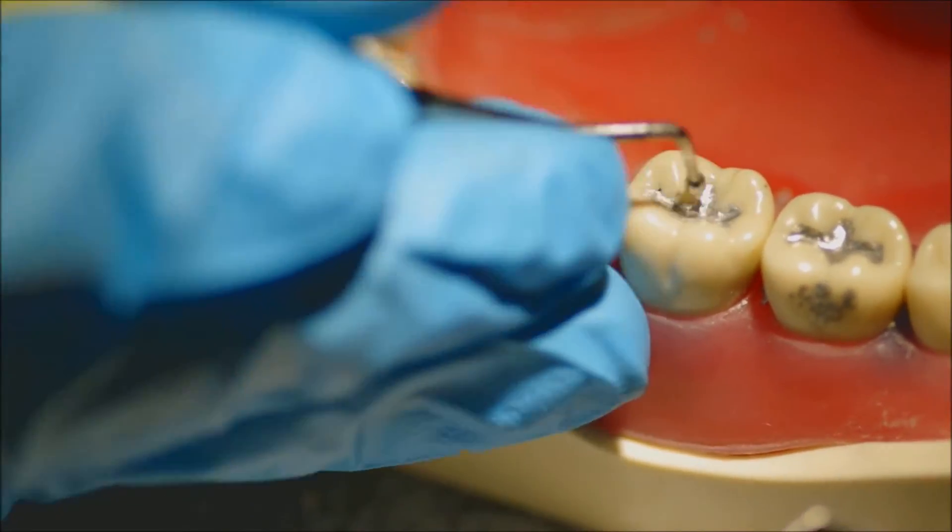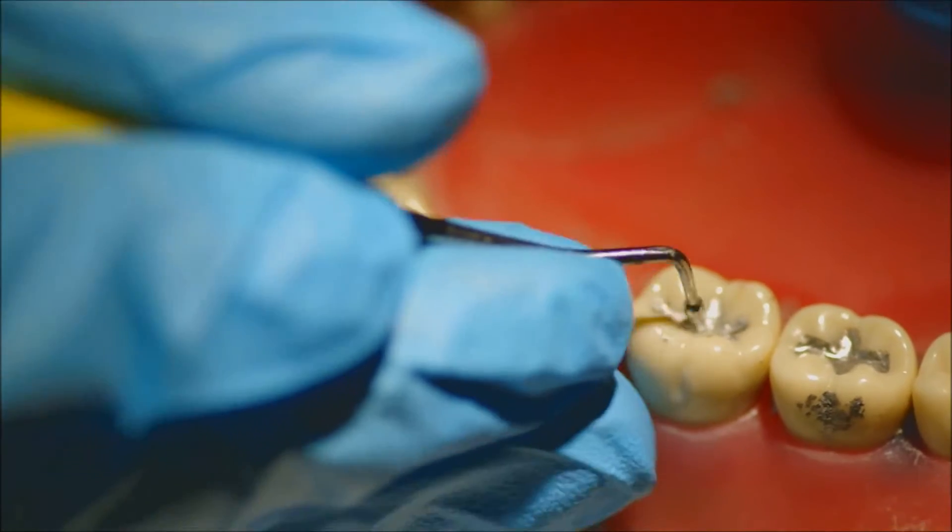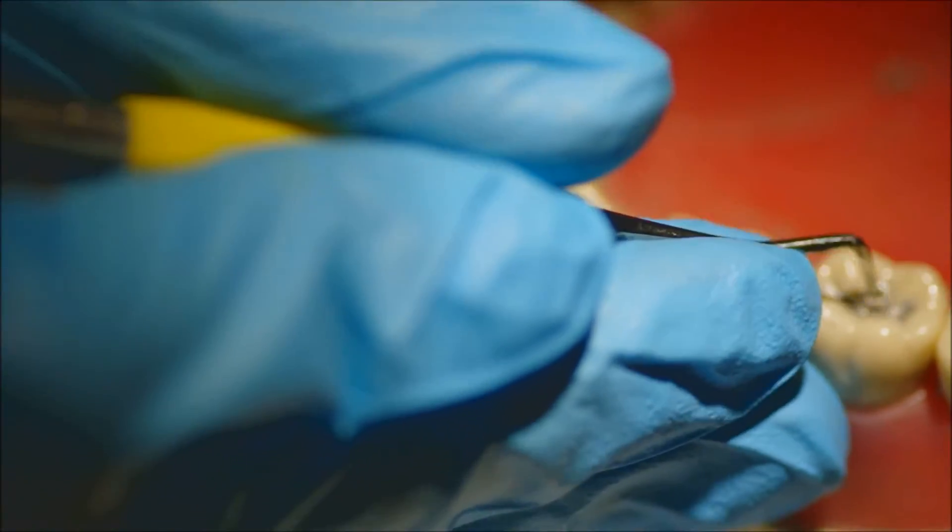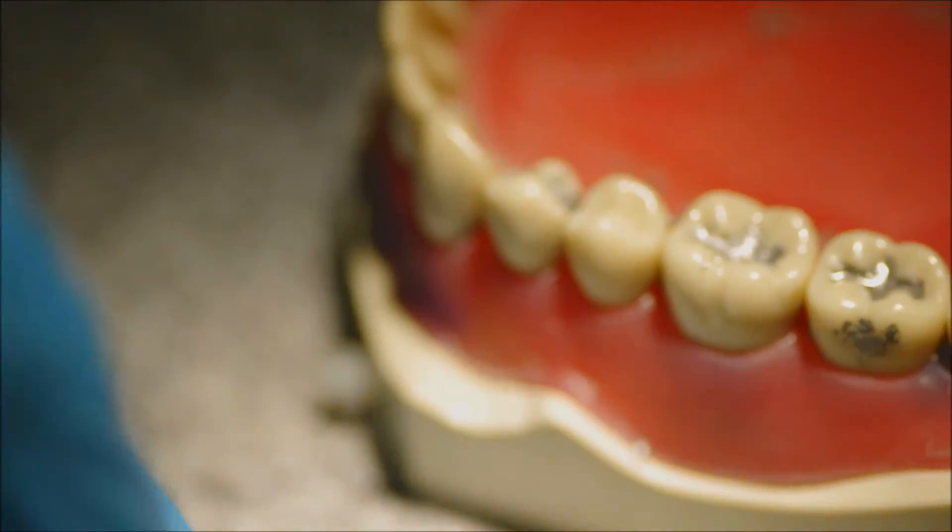In order to refine, you can go in with a ball burnisher to smoothen the surface after you've done your initial bit of carving with the acorn.